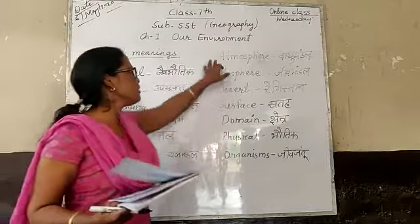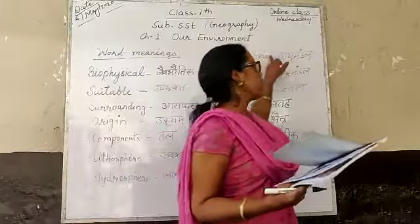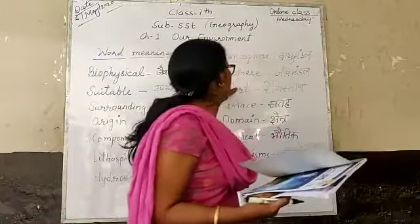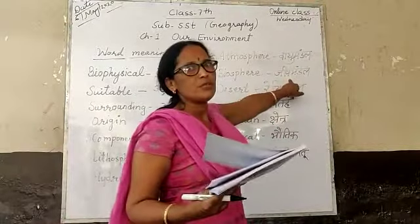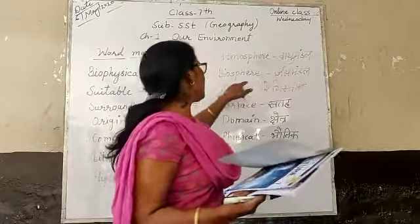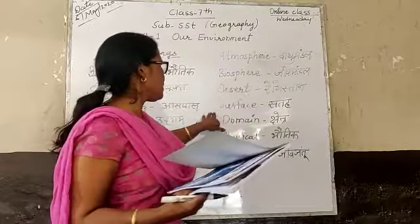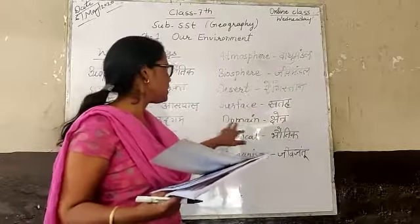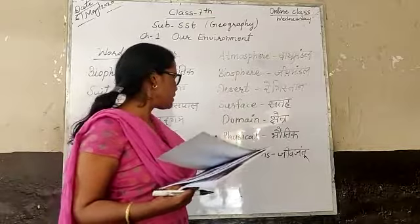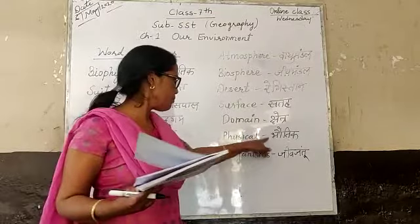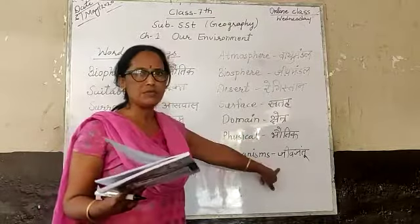Hydrosphere matlab paani ka pura hissa. Atmosphere — Vayu Mandal. Biosphere — Jeev Mandal, jis mein peedon, podey, jeev, jantu, jangal — sab kuch rehte hain. Desert — marusthaal. Sarphe — satah. Domain — Kshetra. Physical organisms hote hain — jeev jantu.